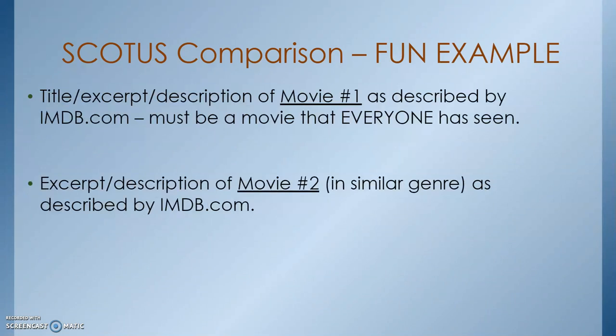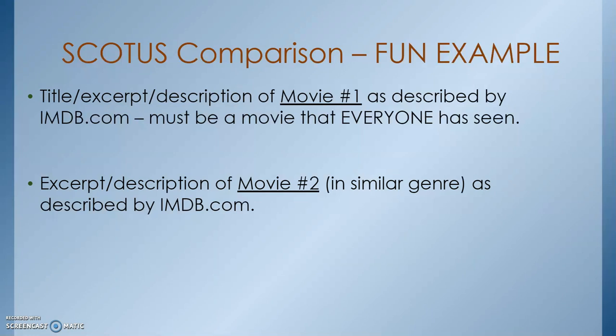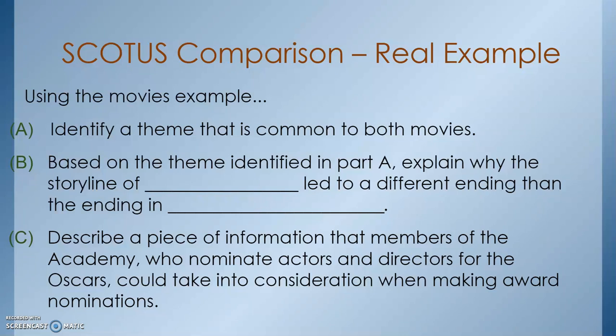The homework assignment is a different one. As a class they picked two movies in groups, but since this is a homework assignment, you are choosing two movies for yourself. They need to be two similar types of movies — same genre — and you need to use the descriptions from imdb.com. You'll have the title, excerpt, and description for movie one and movie two, and that's what you'll use as your comparison. Using those two movie examples: for Part A, identify a theme that's common to both movies. For Part B, based on the theme you identified in A, explain the storyline of movie one.